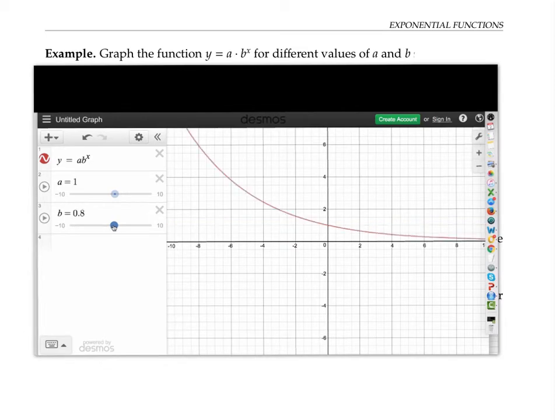As b gets into fractional territory—0.8, 0.7, 0.6—my graph starts to slope the other way. It's decreasing now instead of increasing. But notice that the y-intercept still hasn't changed.